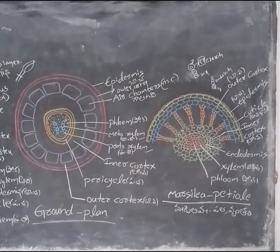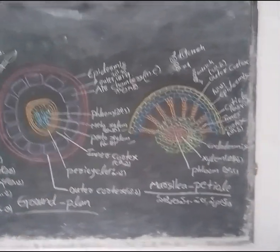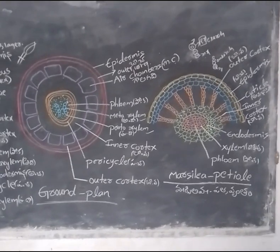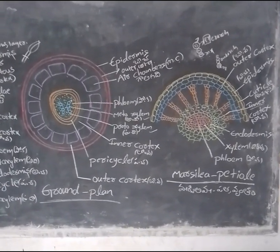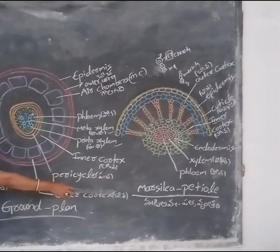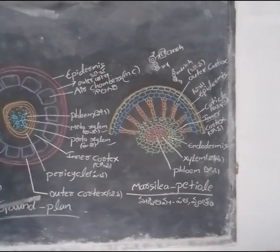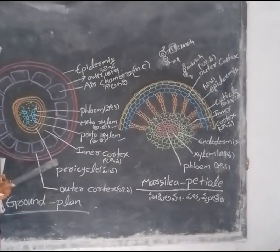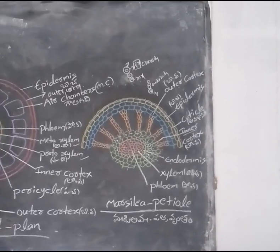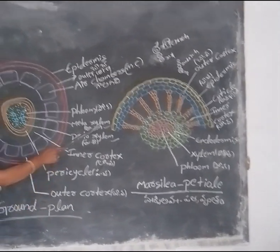Today we are discussing the cross-section anatomy of Marsilea petiole. The cross-section of the Marsilea petiole is differentiated into 3 regions, and we have about 33% of the petiole structure.